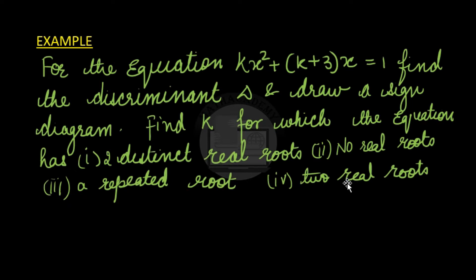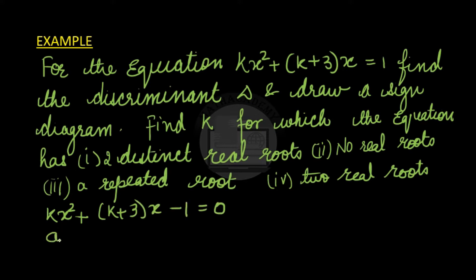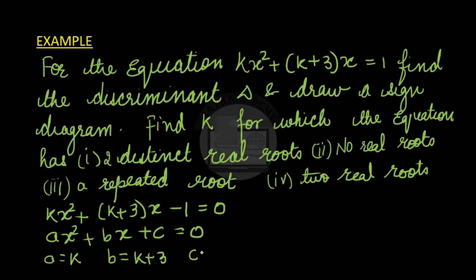The first thing asked is to find the discriminant, and to do that we must bring the equation into standard form — all terms on the left hand side. So we move 1 to the left hand side, then compare with the standard equation. Comparing, we get a equals k, b equals k plus 3, and c equals negative 1.